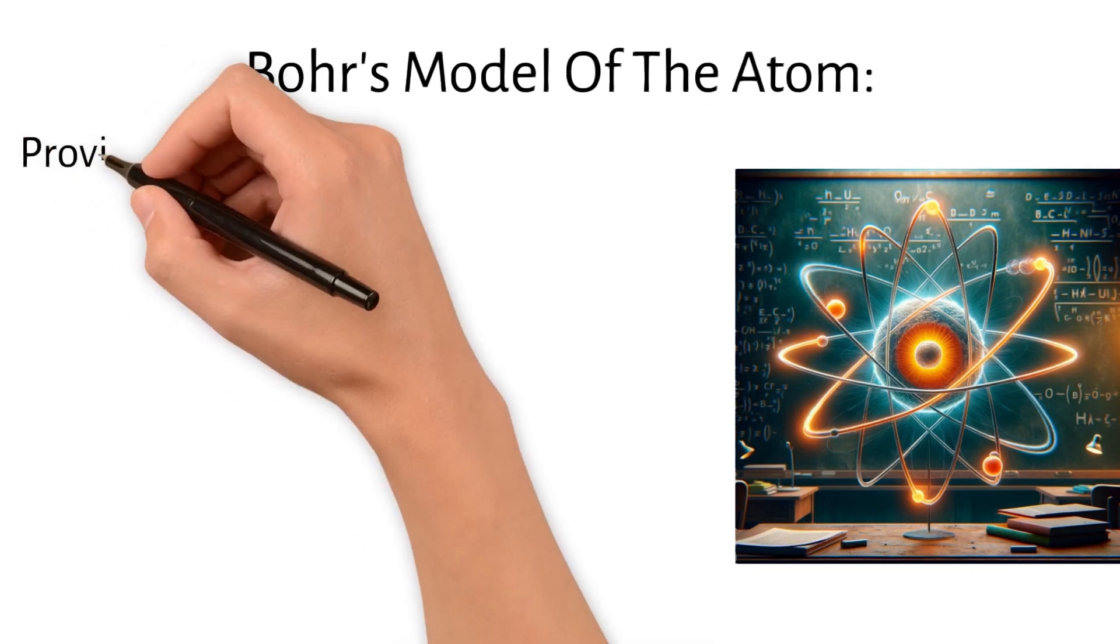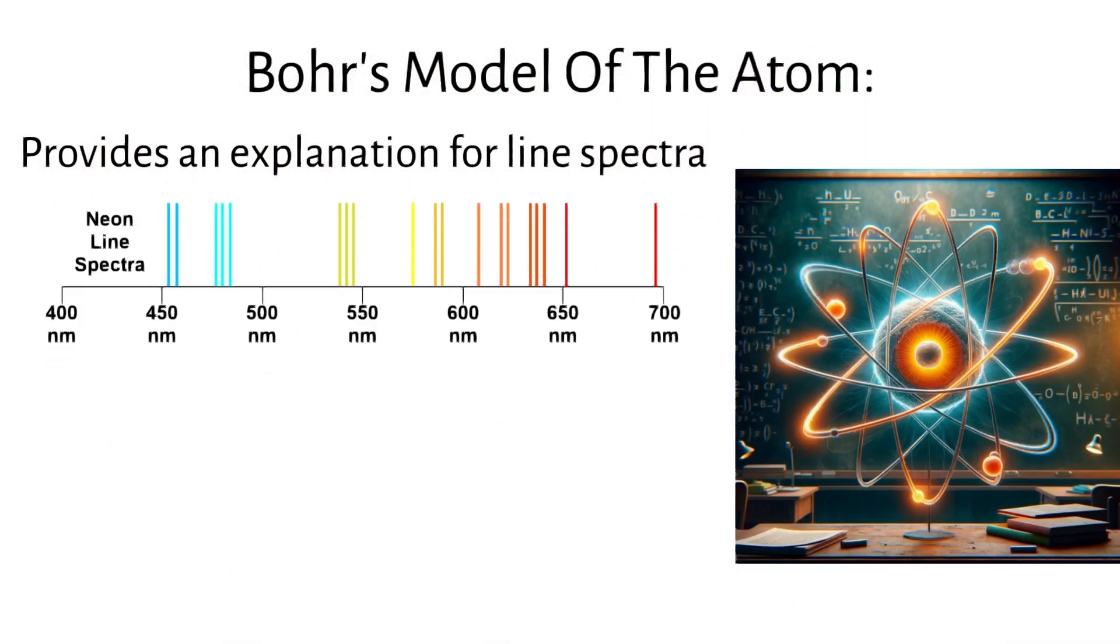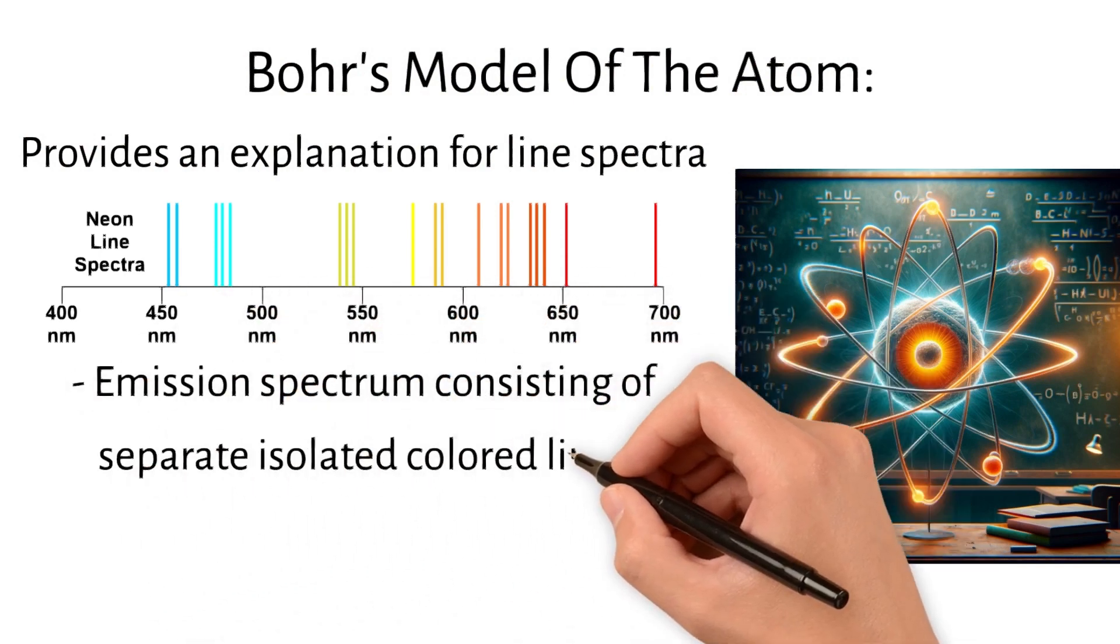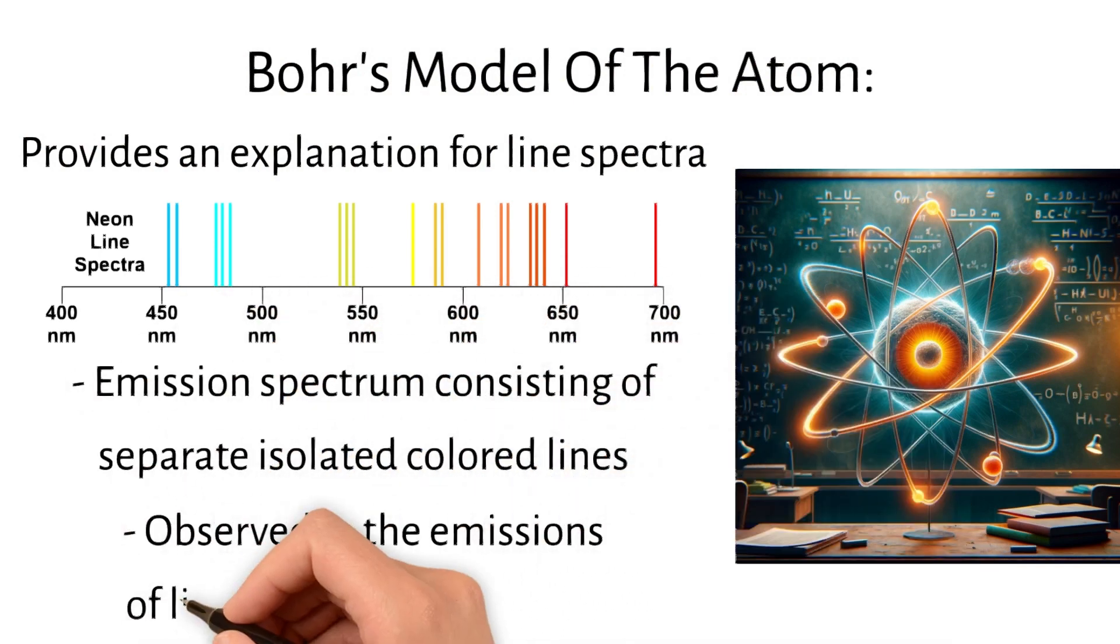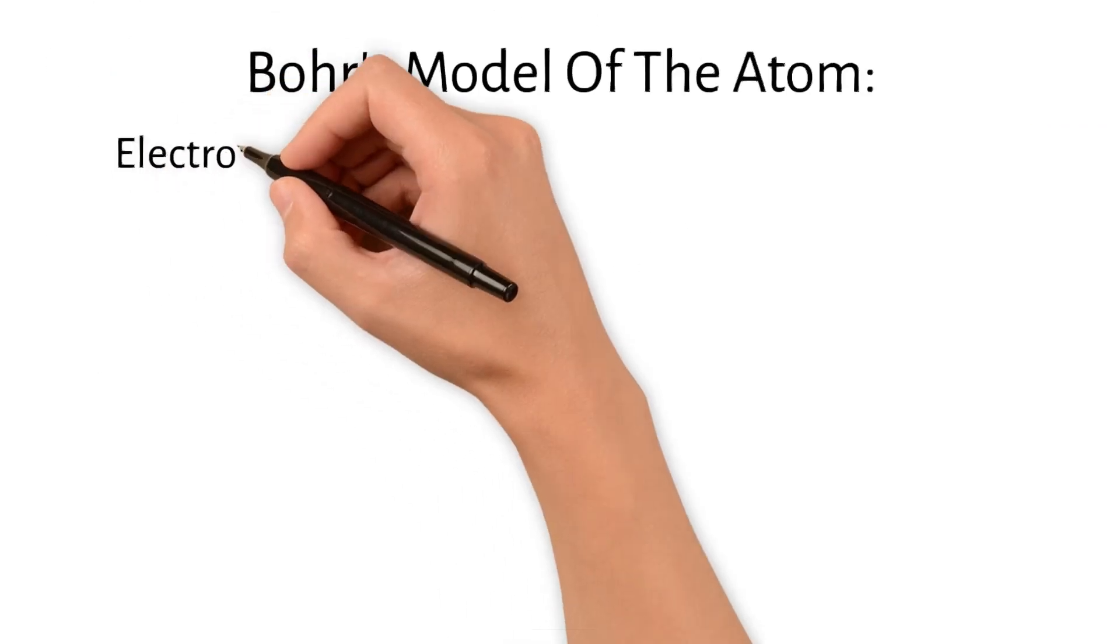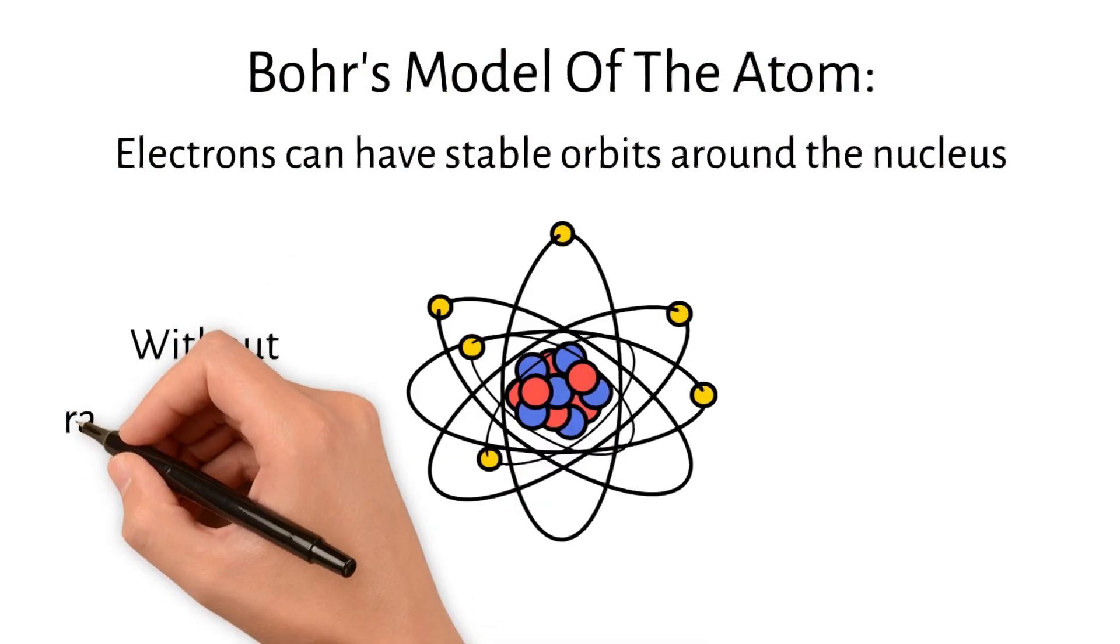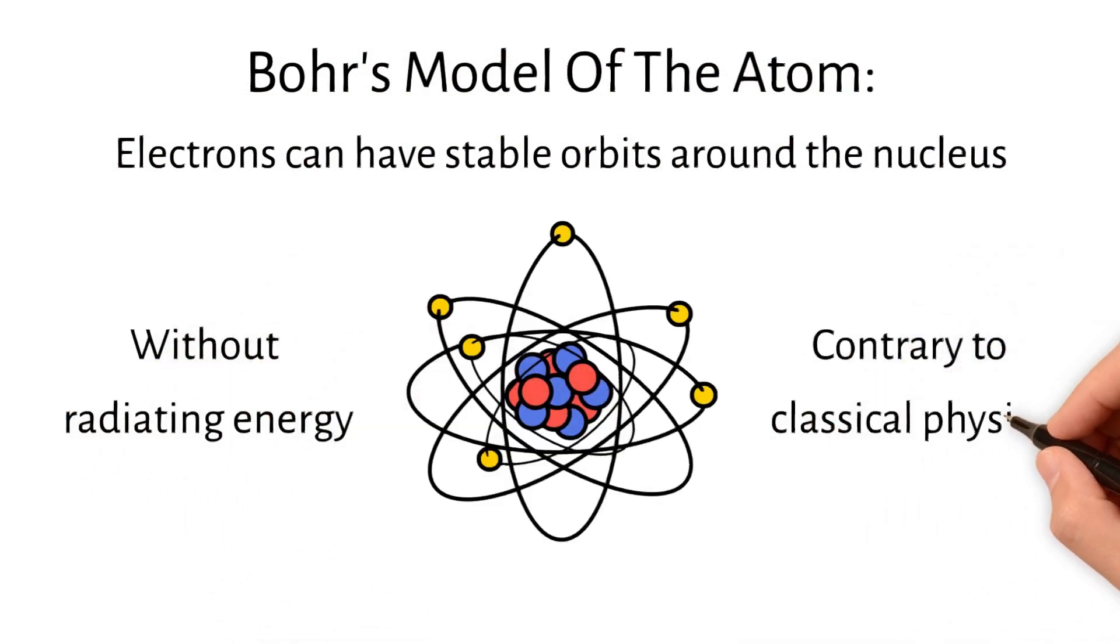Bohr's model of the atom is a key concept in early quantum physics and provides a fundamental explanation for the line spectra, an emission spectrum consisting of separate, isolated colored lines observed in the emissions of light from excited gases. Niels Bohr proposed this model to explain how electrons can have stable orbits around the nucleus without radiating energy, contrary to what classical physics suggested.